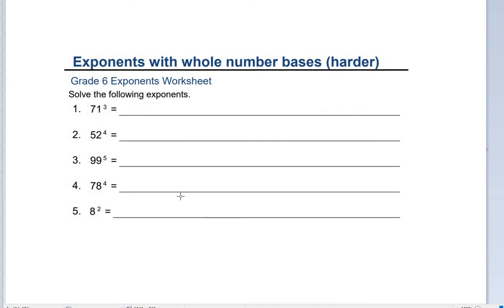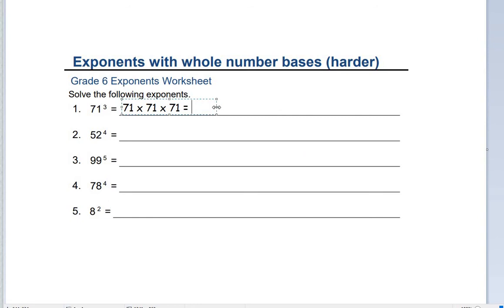Number 1: 71 cubed. What we do is 71 times 71 times 71. So if we did 71 squared — that's 71 times 71 — we get a total of 5,041. Then we times it by 71 again, and we get a total of 357,911.